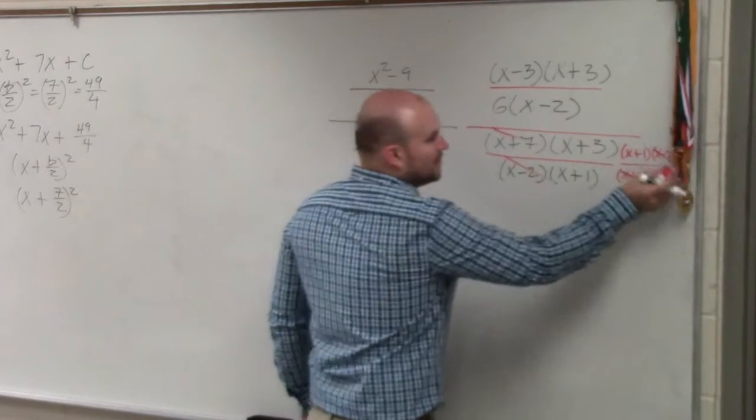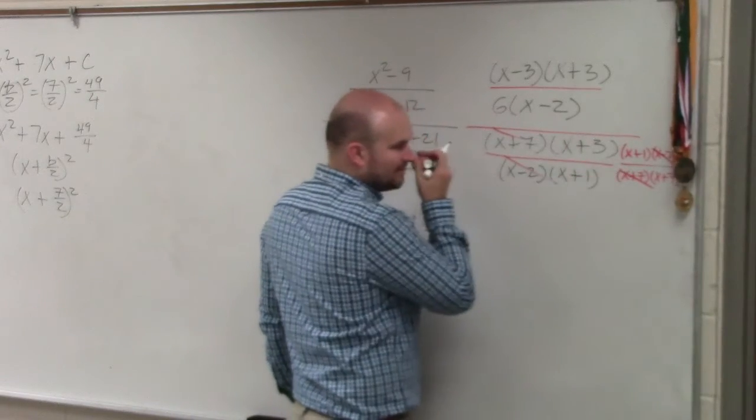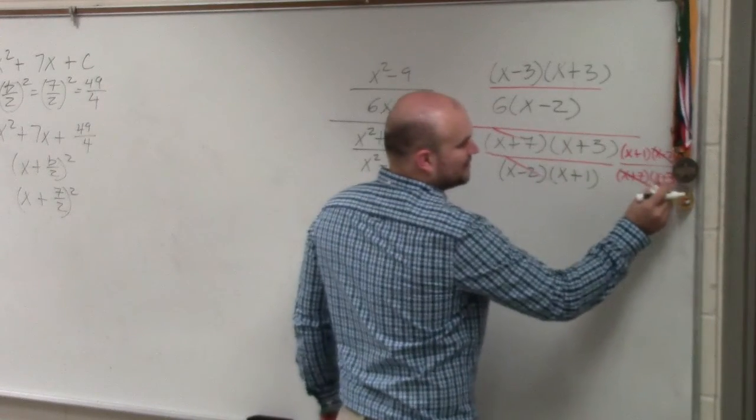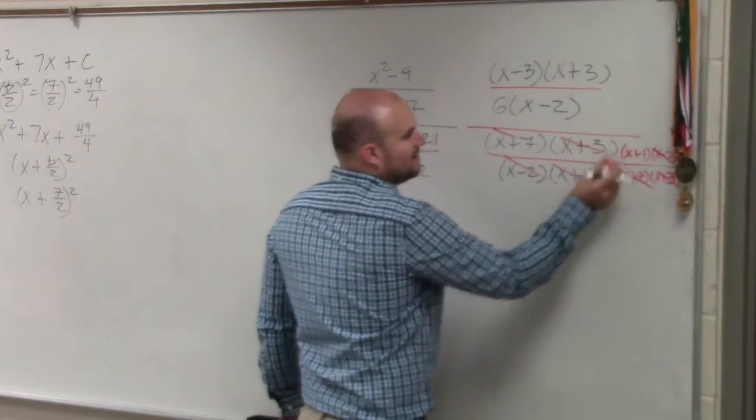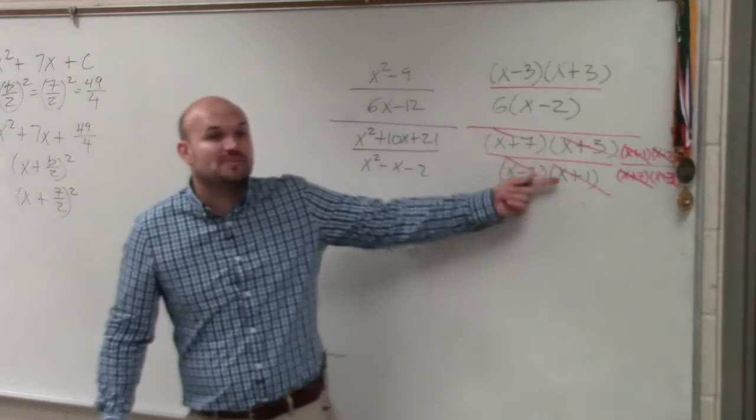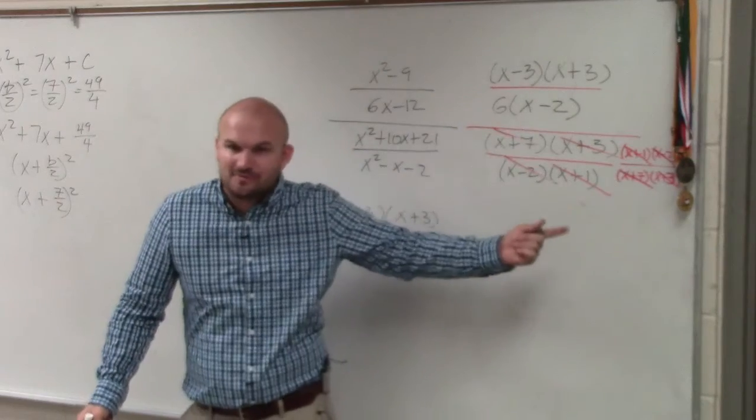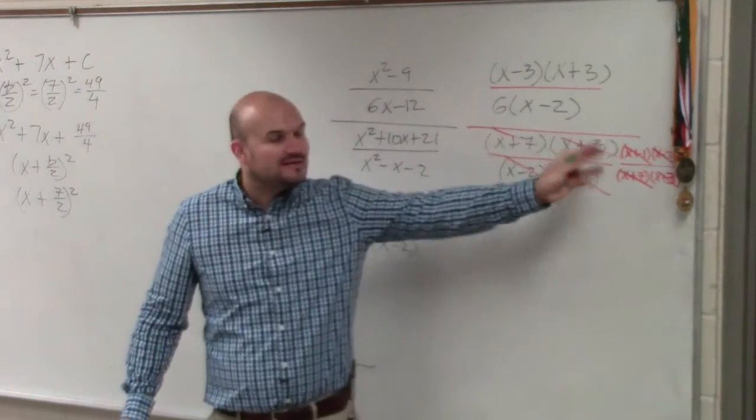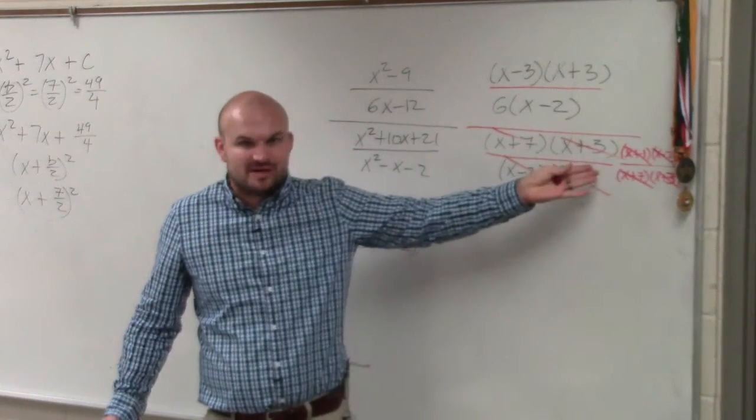Those divide out. Those divide out. So what did I not write? Oh, I didn't write it correctly. Those divide out, and those divide out. Using our division property, if you multiply a fraction by its reciprocal, the division property makes everything 1 in the denominator. Does everybody see that?